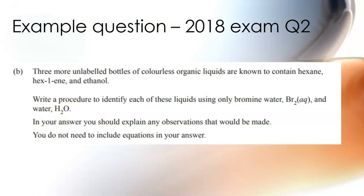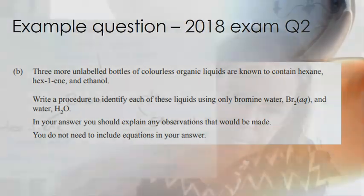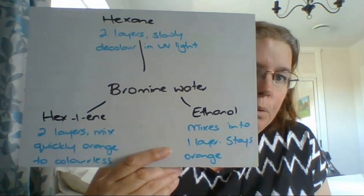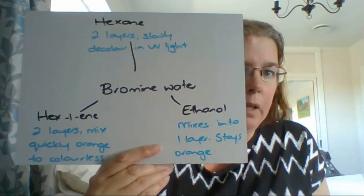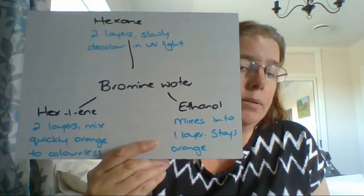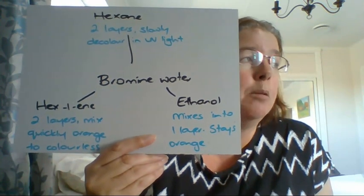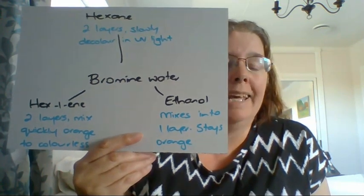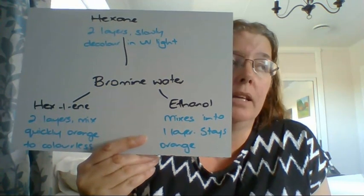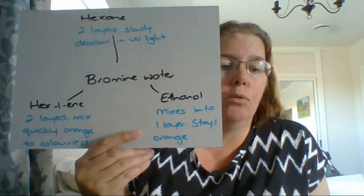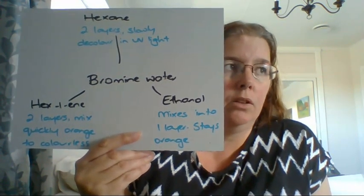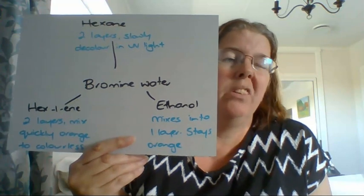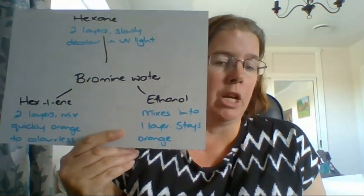If we add all three compounds to bromine water: the hexane will form two layers, and in UV light it might very slowly decolour — this will be very slow. The hex-1-ene will also form two layers, but when you mix them up it will very quickly go from orange to colourless. The ethanol will mix into one layer because it's soluble in water, and it will stay orange — there may be very slow fading in UV light over time.